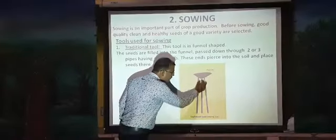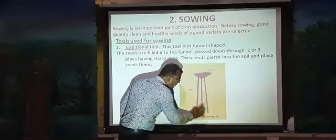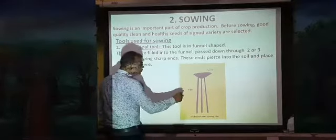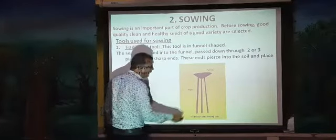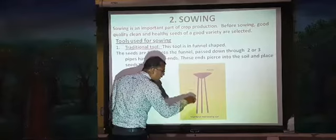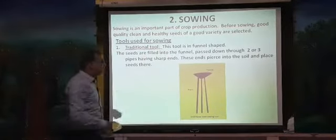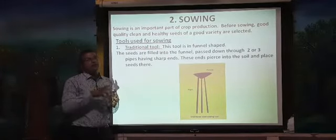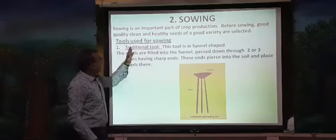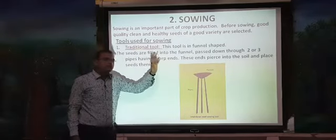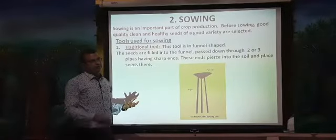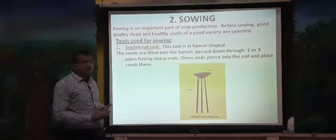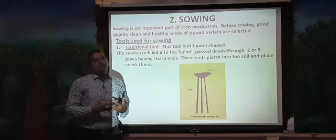Those seeds which pass through the pipes — which have sharp ends — pierce the soil and place the seed into that particular place. This is how seeds are sown using the traditional tool. Traditionally, farmers have been using this kind of tool for sowing of seeds.